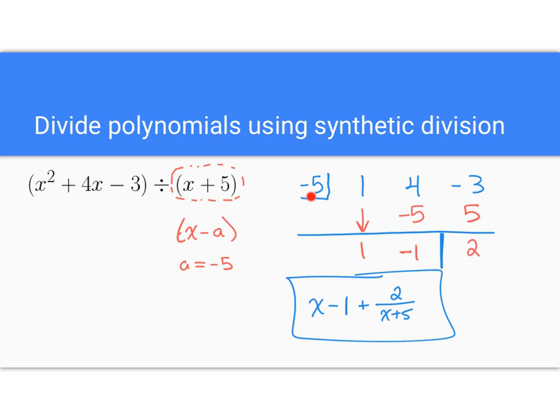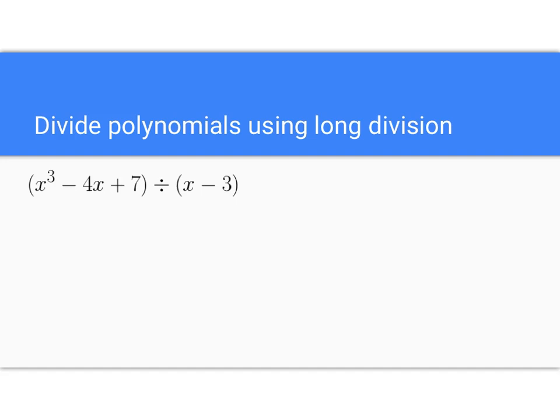Synthetic is usually one that people prefer. The downside is you can only use synthetic if you're dividing by something like this. So if you end up dividing by, like, x squared plus 2, you would not be able to use synthetic division here. Because you're not dividing by something that looks like that. So synthetic division, again, most people prefer it, but you can only use it in specific instances. Long division can be used whenever you need it.